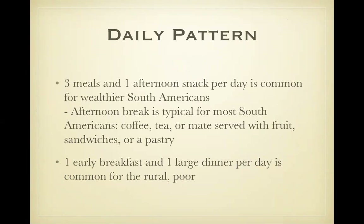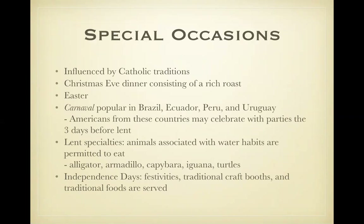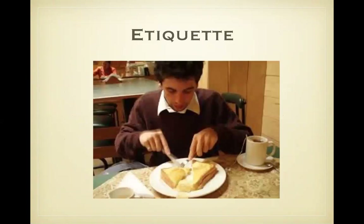Daily meal pattern: three meals and one afternoon snack, very common as long as they could afford it. Lunch was very leisurely. In Argentina, they often spent time lounging after lunch and they would call this las sombras. Special occasions: many have religious influences. For holidays they often cook a lechon — the suckling pig, similar to a Hawaiian pig cooked over a barbecue. Capybara — a large rodent and the largest rodent in the world, related to guinea pigs — is sometimes eaten; it's allowed during Lent.